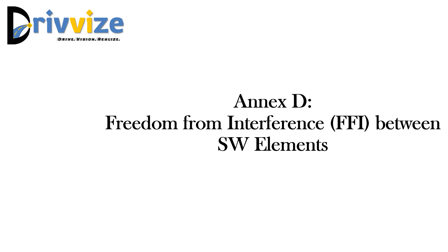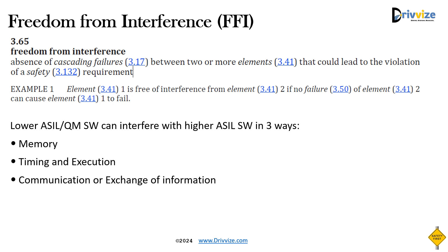In this video we are going to understand freedom from interference between software elements, also called FFI in short. Freedom from interference, or FFI, is defined as the absence of cascading failure between two or more elements that could lead to a violation of safety requirements. Cascading failure is the failure of one element that cascades to cause another element to fail, and is also called dependent failures.